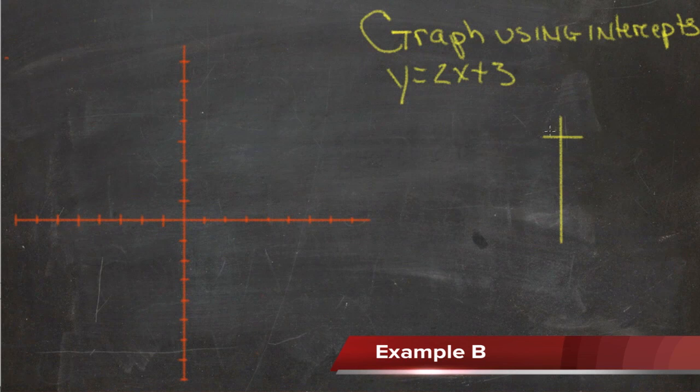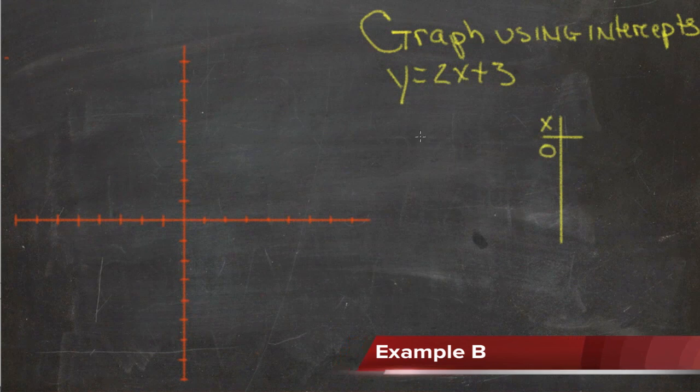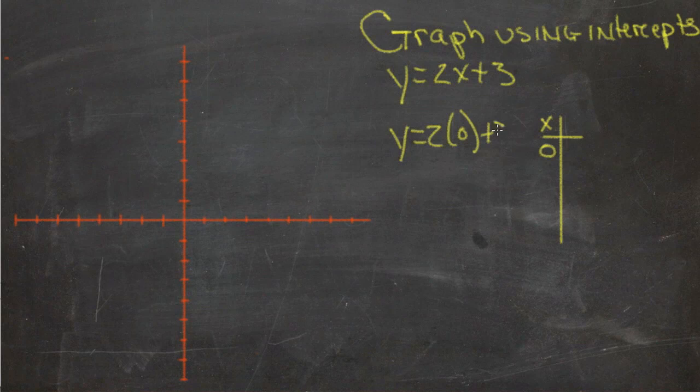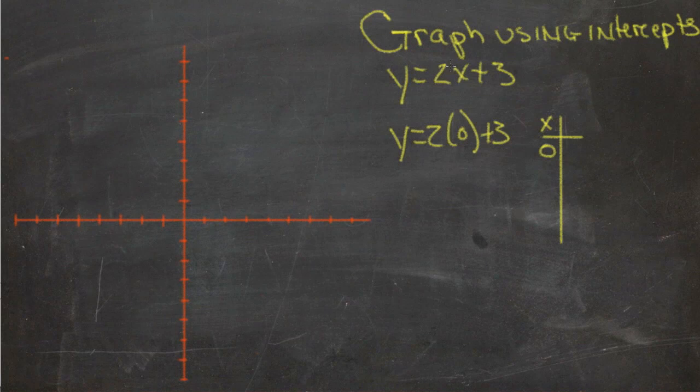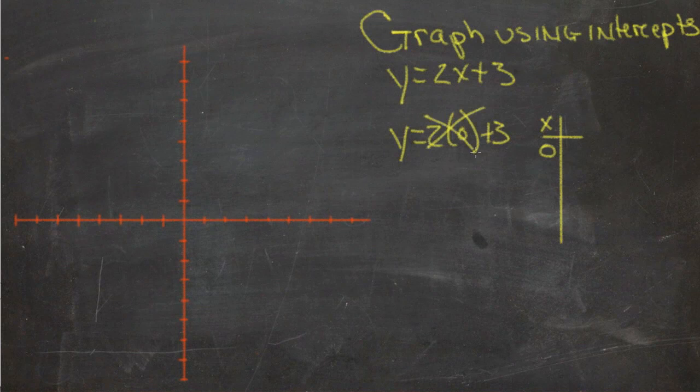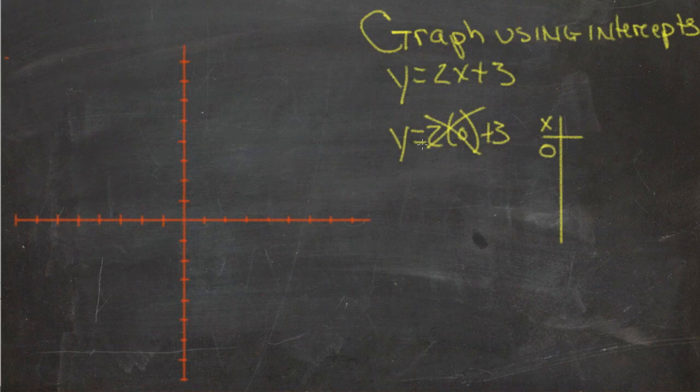So first let's substitute in 0 for x. So when x is 0 we get y equals 2 times 0 plus 3, and 2 times 0 is 0, anything times 0 is 0. So really effectively that x term just goes away and we get y equals 3.